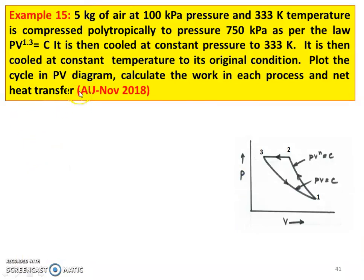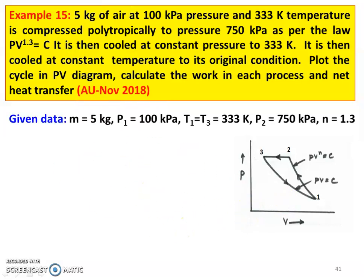Example number 15 from November 2018 question paper. It is a cyclic process. 5 kg of air at 100 kPa pressure and 333 K is compressed polytropically to a pressure of 750 kPa as per the law PV^1.3 = constant. It is then cooled at constant pressure to 333 K, then cooled at constant temperature to its original condition. Plot the PV diagram and calculate the work for each process and net heat transfer. Process 1→2: polytropic (N=1.3). Process 2→3: constant pressure. Process 3→1: isothermal (PV = constant).